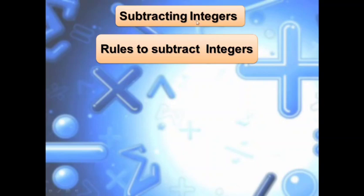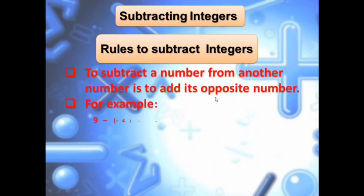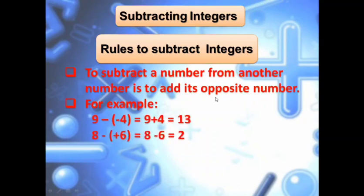Coming to subtracting integers. The rule to subtract integers is: to subtract a number from another number is to add its opposite number. That means if I want to subtract 3 minus minus 4, I will write the opposite of minus 4, which is plus 4. I get 3 plus 4, and the answer is 7.